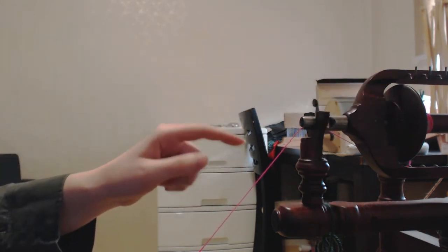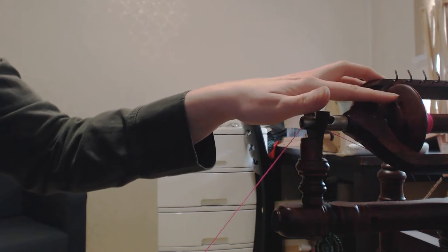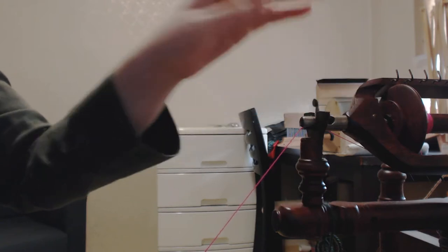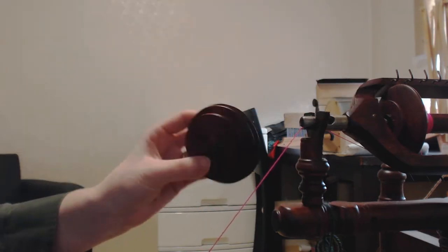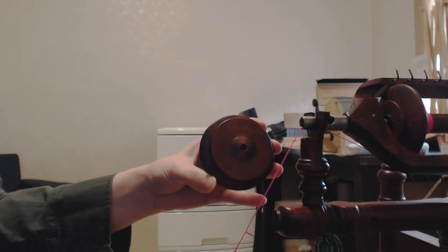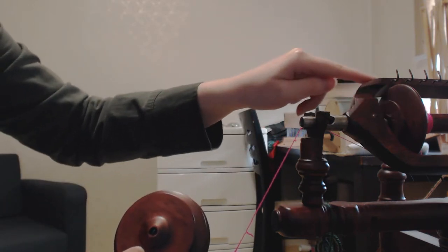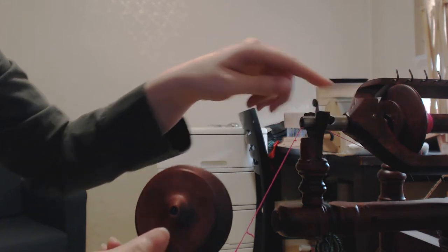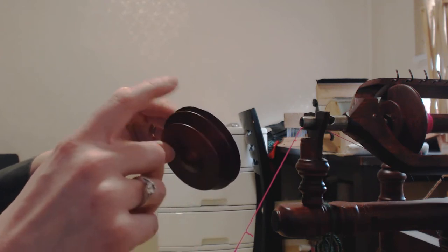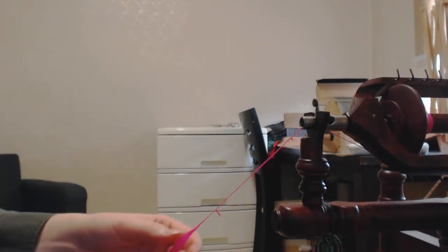And because this is a double drive wheel setup that I have, the drive band goes around the bobbin, and it also goes around a separate whorl which attaches to the flyer. I have the larger one here. So the smaller one that I have is obviously smaller than this one, it's probably half this size, and that is attached to the flyer, this part that has the hooks. The drive band goes around here, and then also on the part of the bobbin. So that's how I have this one set up.